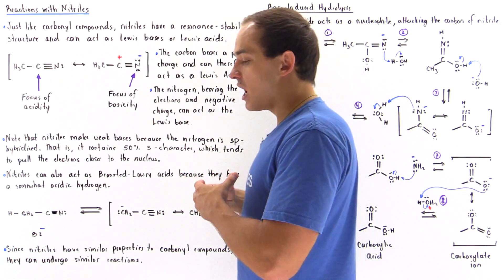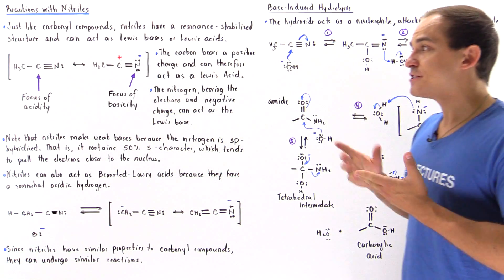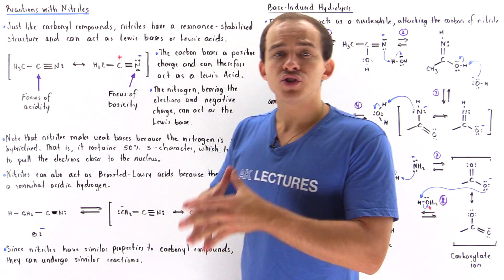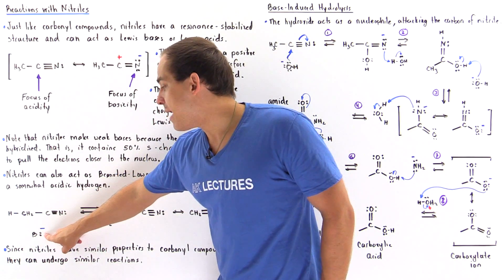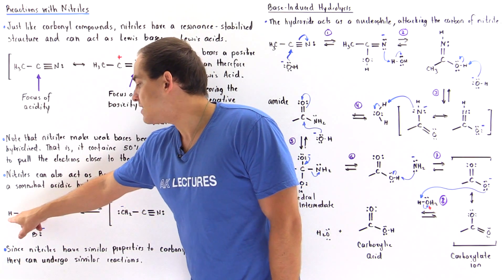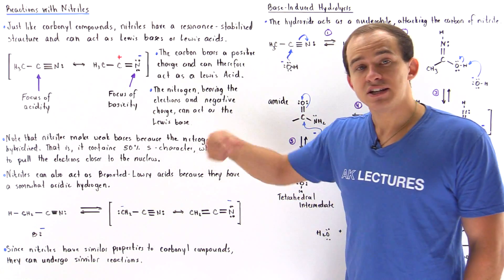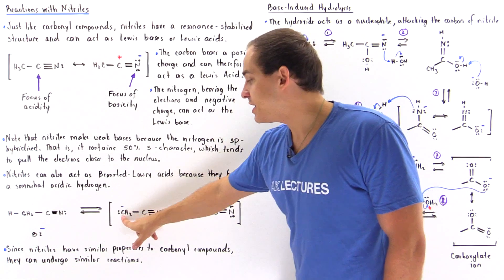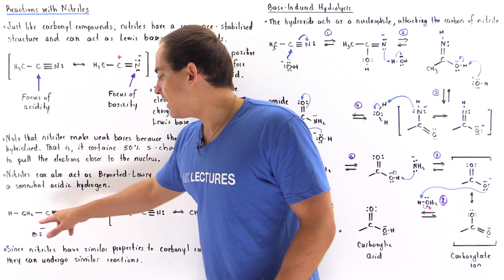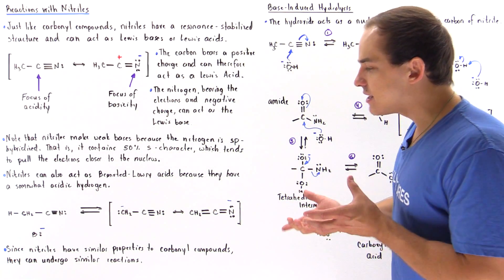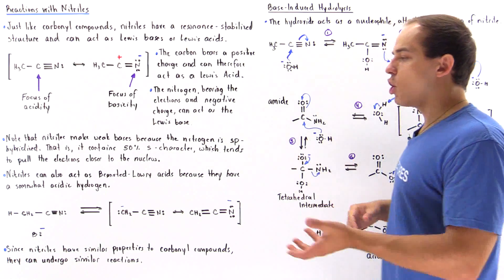Not only can nitrile compounds act as Lewis acids, they can also act as Brønsted-Lowry acids, because just like carbonyl compounds, they also have an acidic hydrogen atom. If a base pulls away this H atom, leaving the two electrons on the carbon, we have resonance stabilization — the delocalization of negative charge between the electropositive carbon and the electronegative nitrogen atom. The pKa of nitriles is usually about 24, so they are somewhat acidic, and a strong base will be able to pull away those H atoms.